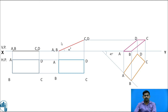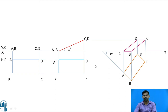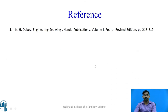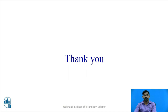This is the complete solution for the problem, where rectangle ABCD is given with inclination to the HP of 30 degrees and inclination to the VP of 45 degrees. These are the references. Thank you.